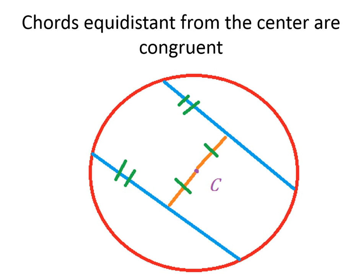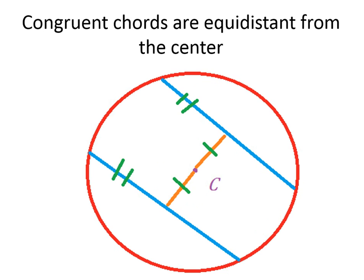Chords equidistant from the center must be congruent. If you draw two chords that are the same distance from the center — you have to make a 90-degree angle to find the distance — if that distance is equal, then the chords must be congruent. The reverse is also true: if your chords are congruent, then they must be equidistant from the center. So if you have two chords and they're congruent, the distance from each of those chords to the center must also be the same.